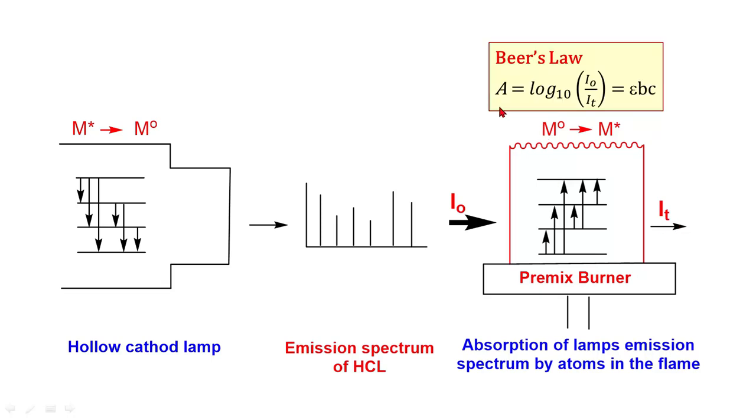Some of the intensity is absorbed by the gaseous ground state atoms and rest of the intensity is transmitted. Absorbance is measured, which is given as A = log(I₀/I) = εbc, where ε is molar absorptivity, b is the path length, and c is the concentration that corresponds to density of gaseous ground state atoms in the flame.